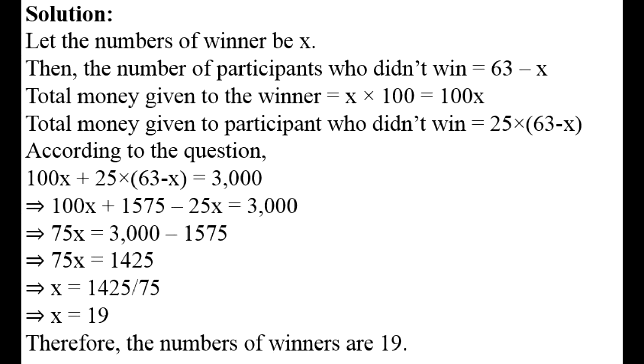Solving: 75x = 1425, so x = 19. This is the number of winners. The number of winners is 19.